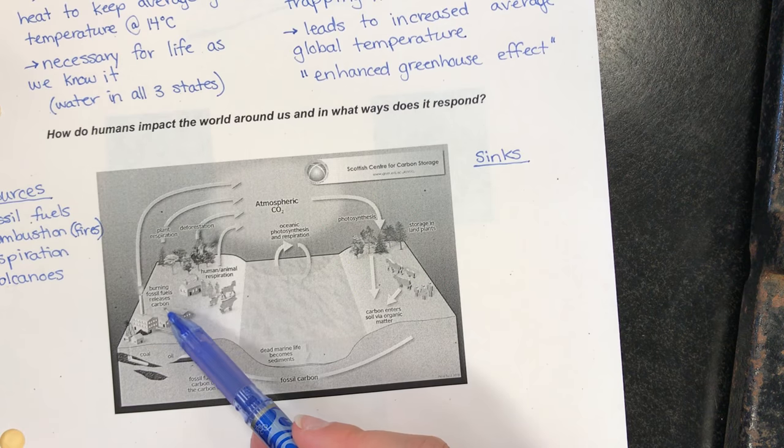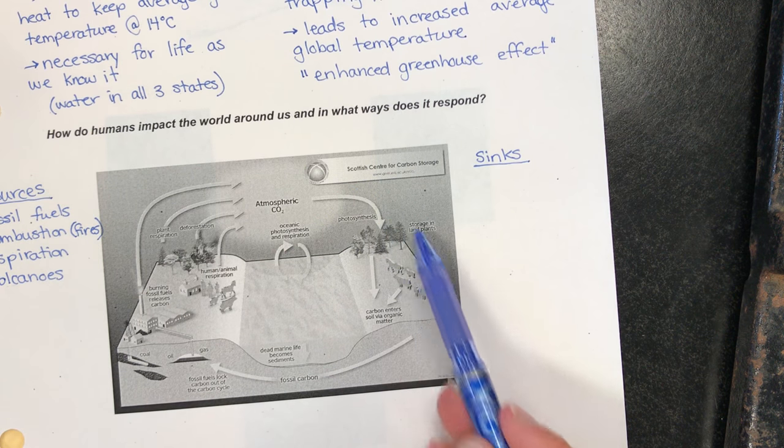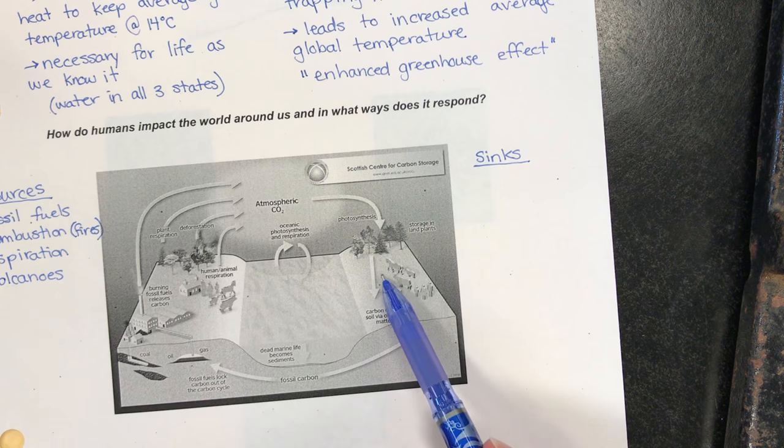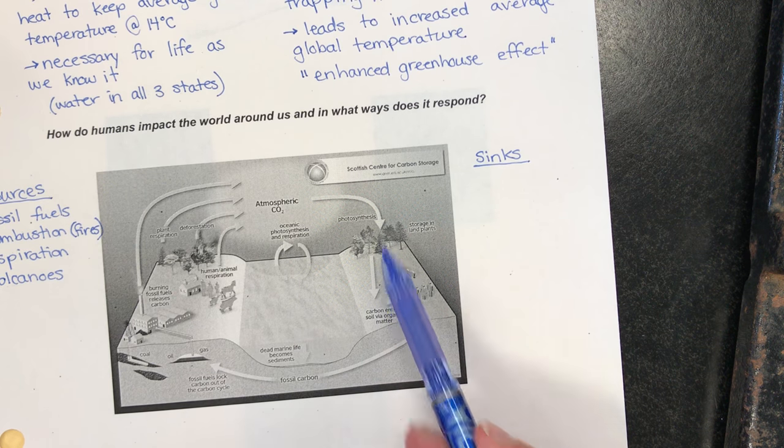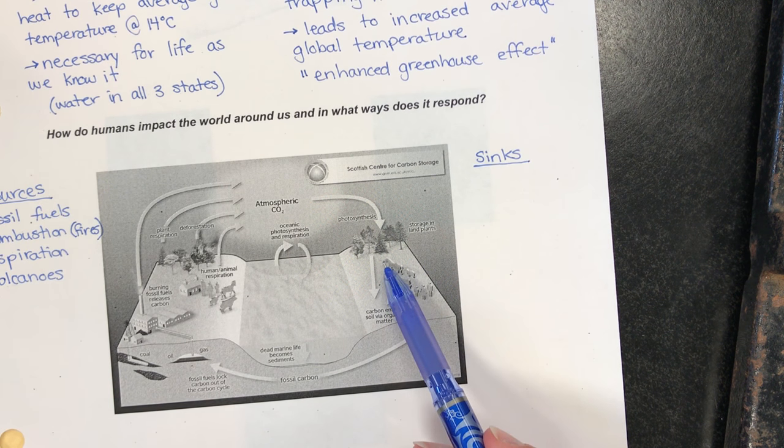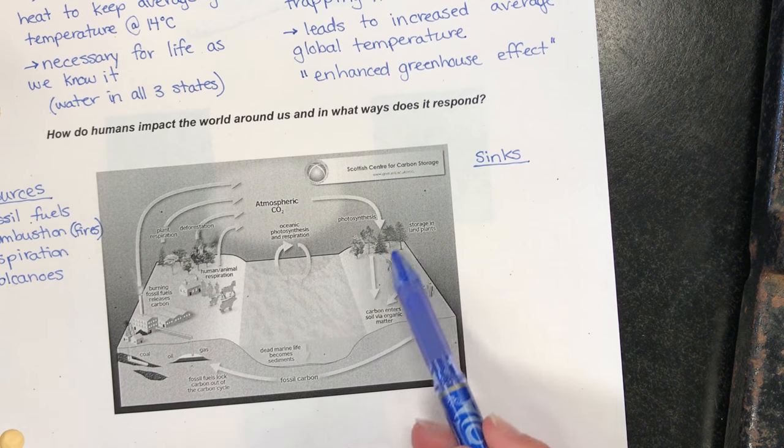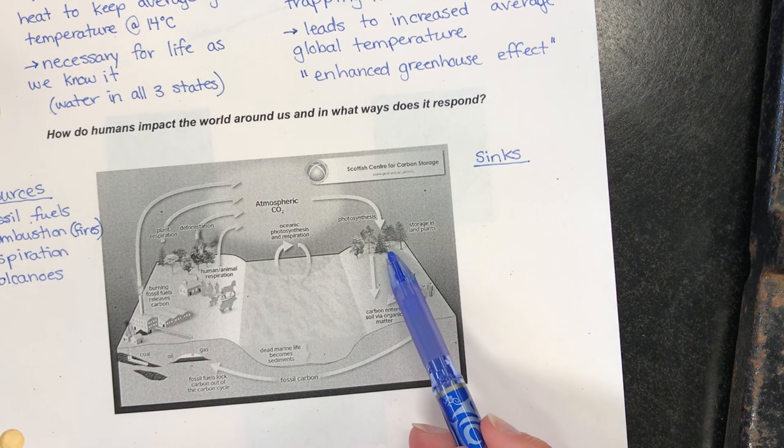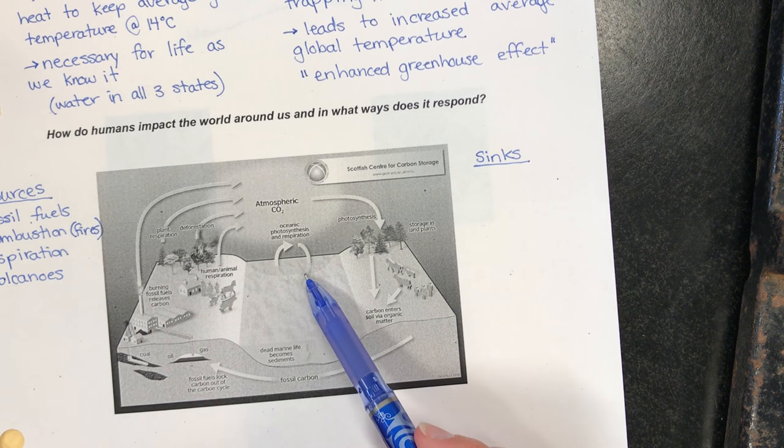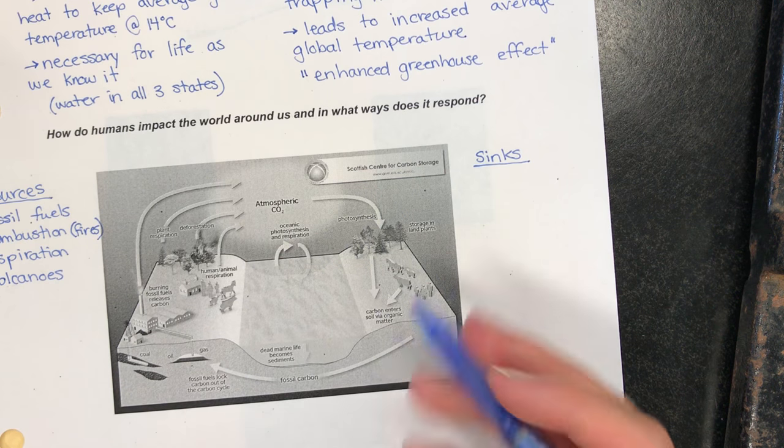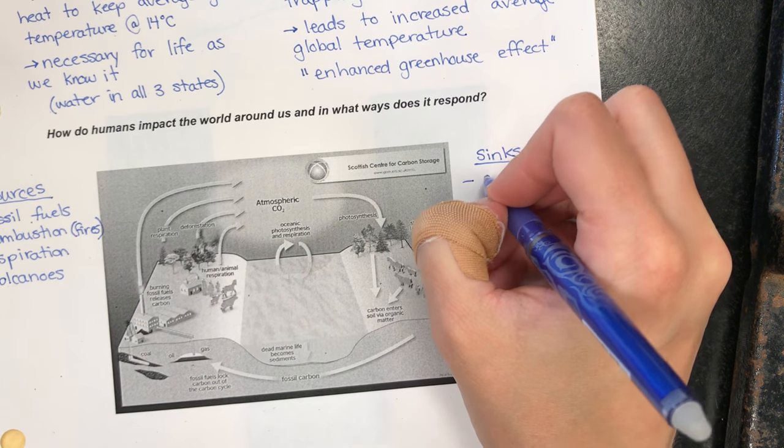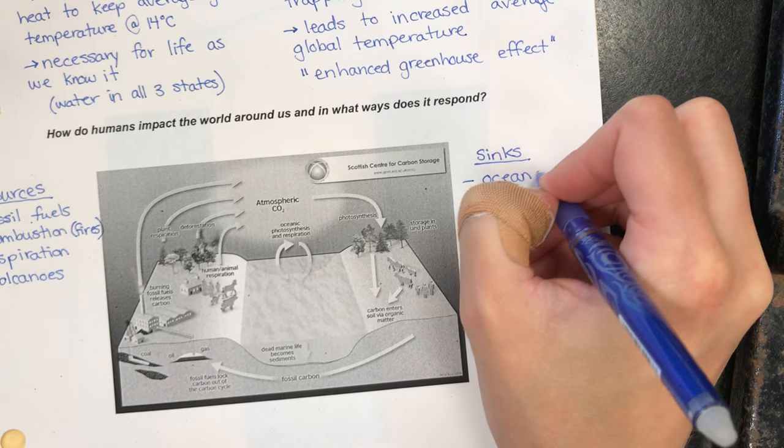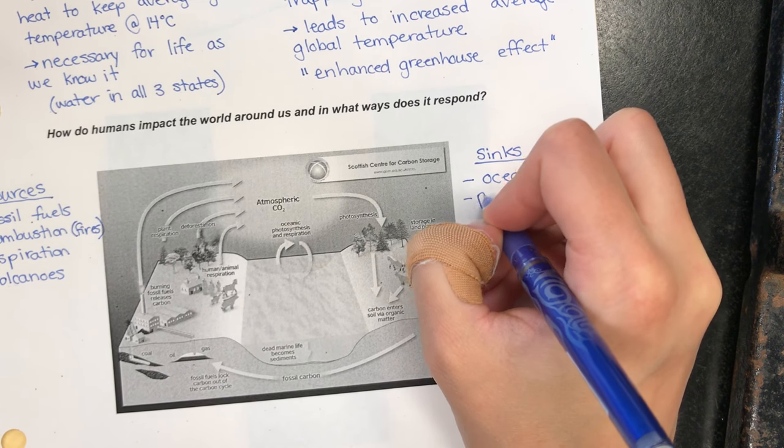But then we also have some carbon sinks. Things like plants through photosynthesis can absorb carbon back into a usable form in terms of building plant pieces. And the ocean is also a carbon sink. So examples: oceans and photosynthesis.